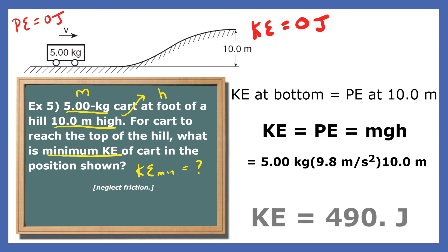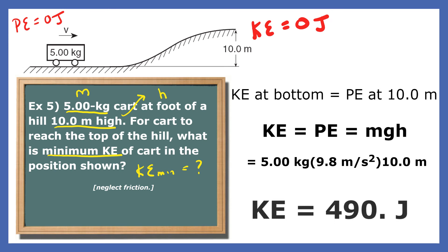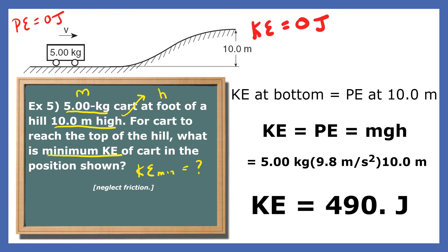Plugging in the mass and the height, we find that the minimum kinetic energy is 490 joules, because the potential energy at the top of the hill is 490 joules.